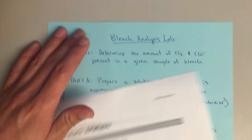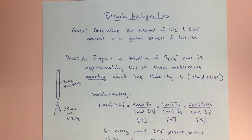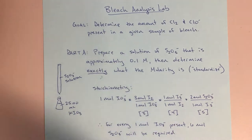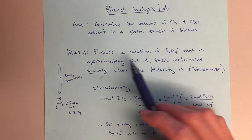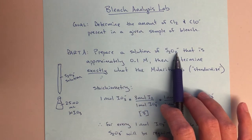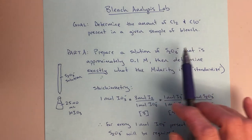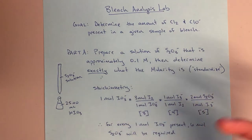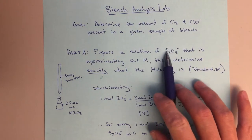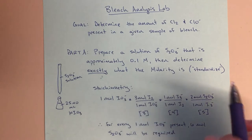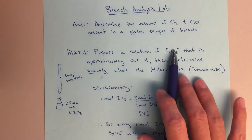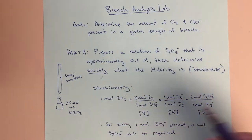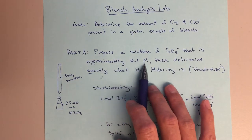Let's move on. I've rewritten the purpose for Part A and Part B. For Part A, the goal is to prepare a solution of thiosulfate — S2O3⁻, which we'll also see written as Na₂S2O3, and those are interchangeable. First, we're going to prepare a solution that is approximately 0.1 molar by weighing out some solid sodium thiosulfate and dissolving it in water.